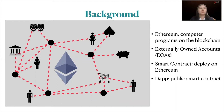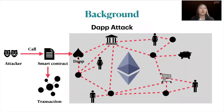Ethereum DApps are public decentralized applications that interact with the Ethereum blockchain, providing services such as gambling, online voting, and token systems. DApps use a set of smart contracts as on-chain backends, but also have off-chain components. As the largest DApp market, Ethereum has faced quite a few high-impact attacks on DApps, resulting in millions of dollars in losses.